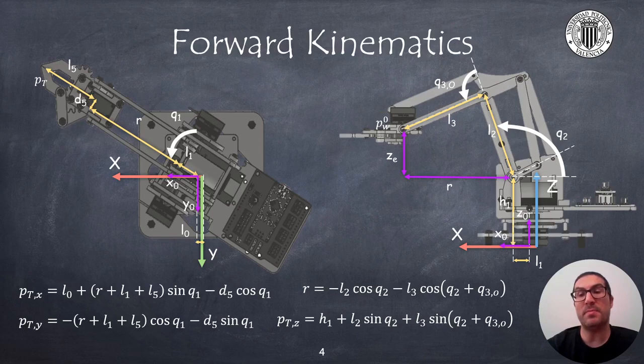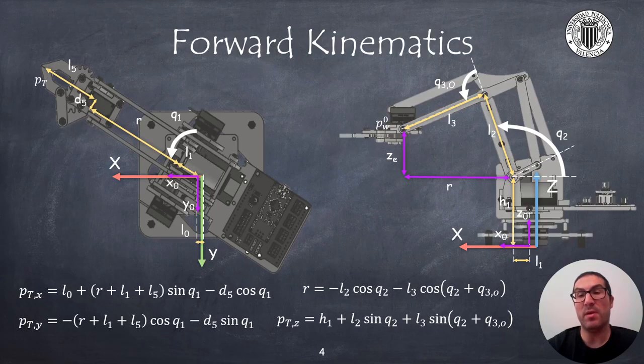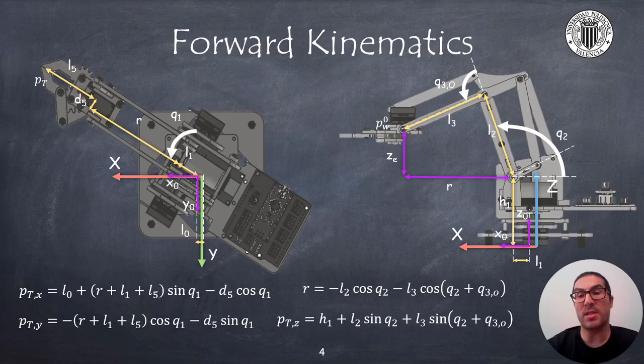This distance is obtained by simple trigonometric relationships, as it can be seen in the figure on the right. Once we have obtained the distance r, then we can easily compute the position x and y of the gripper.